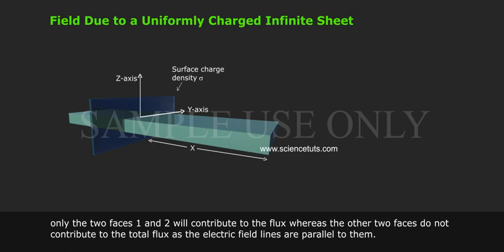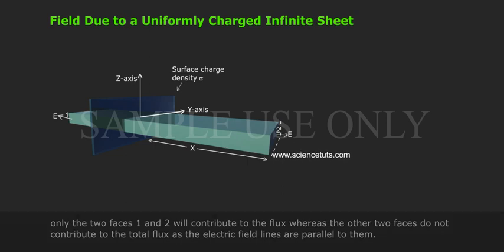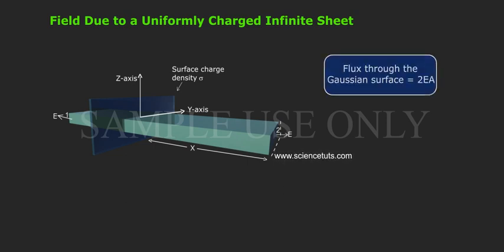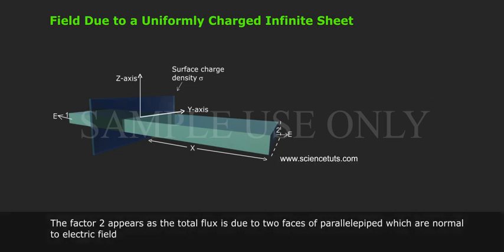Only the two phases 1 and 2 will contribute to the flux, whereas the other two phases do not contribute to the total flux as the electric field lines are parallel to them. Flux through the Gaussian surface is equal to 2EA. The factor of 2 appears because two phases of the parallelepiped are normal to the electric field.